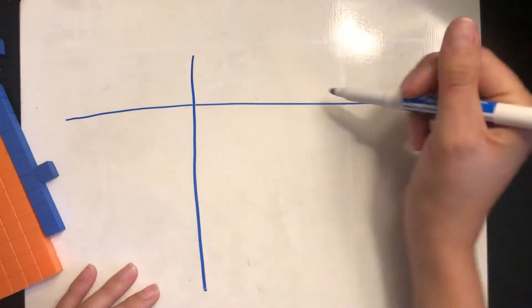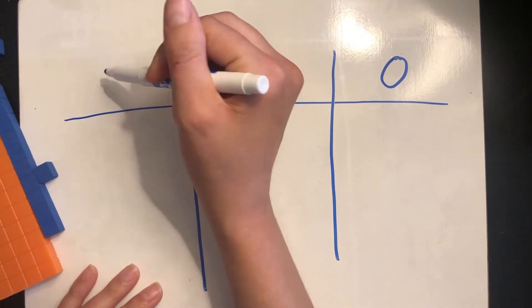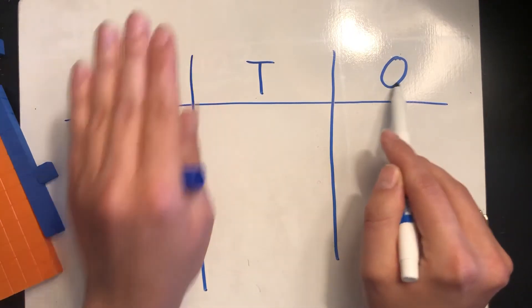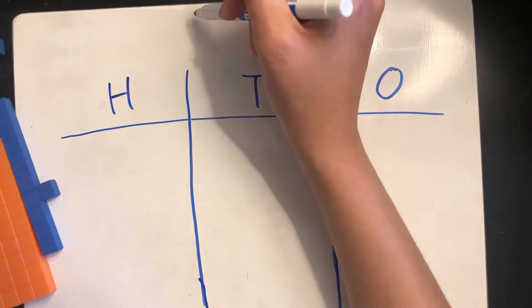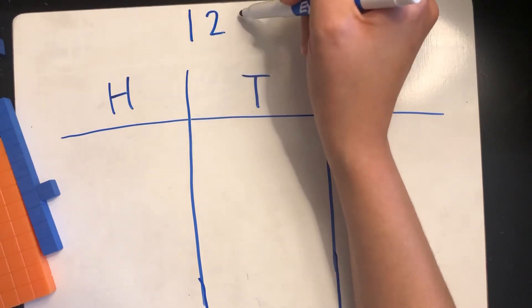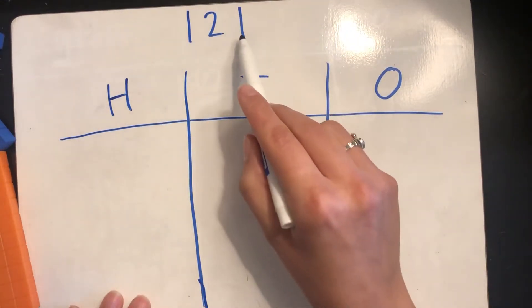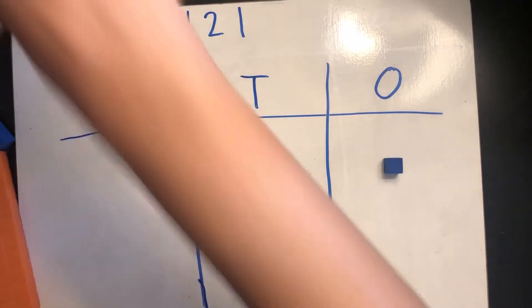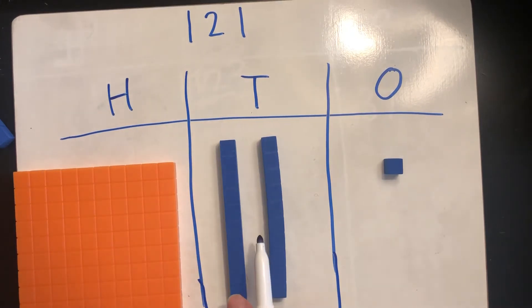I'm going to make a chart where I put my ones, my tens, and my hundreds. We're used to a chart that just has tens and ones, but now I'm adding the hundreds place. So if I want to build the number one hundred twenty-one, I can put each of these digits into the correct place. There is going to be one one, two tens, and one hundred. One hundred twenty-one.